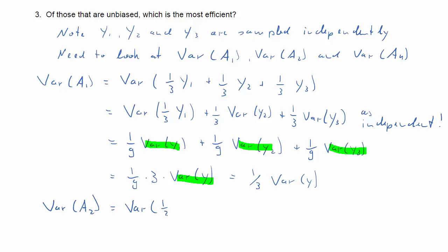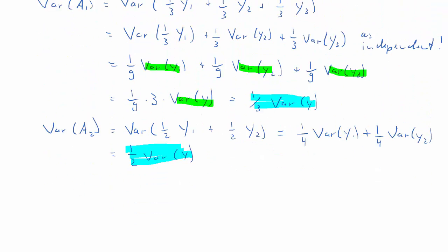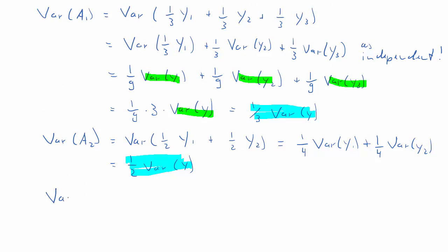What about estimator A2? So same sort of argument. And that eventually leads to 1 over 4 times the variance of y1 plus 1 over 4 times the variance of y2. So you can see we get basically two variances of y but divide by 4 so we get a half variance of y. Now compared to the variance of A1 we can see that the variance of A1 is smaller. It's a third of the variance of y, whereas A2's variance is a half of the variance of y.